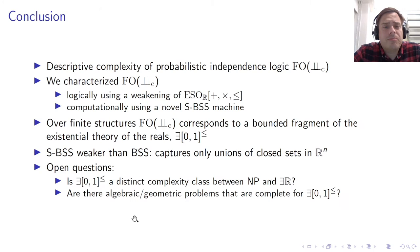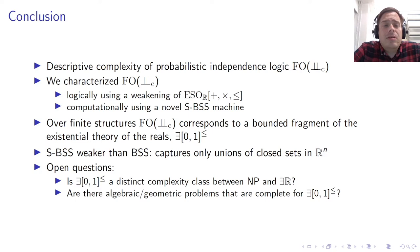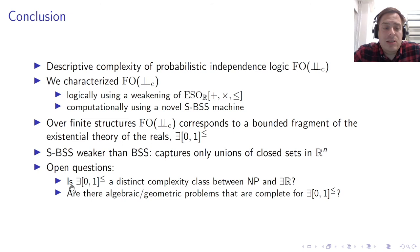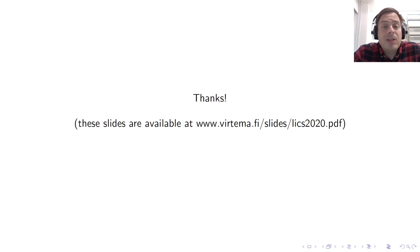To summarize, we studied the descriptive complexity of probabilistic independence logic and characterized it in two ways: logically, by defining a weakening of ESOR, and computationally, using the novel SPS machine. Over finite structures, the logic corresponds to a bounded fragment of ExistR. We also proved a topological result characterizing full SPS computation, showing it is weaker than BSS computation. Open questions include understanding the new complexity class better — whether it collapses to NP or ExistR — and defining natural complete problems for it. Slides are available on our website.